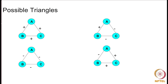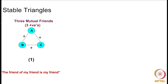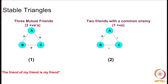Let's look at the stable triangles first. A triangle having all positive edges is one of the stable triangles — there are three mutual friends, and everybody is everybody's friend. This kind of structure follows the popular social belief that 'the friend of my friend is my friend.' The next stable triangle is one where you have one positive edge and two negative edges, indicating two friends who have one common enemy.